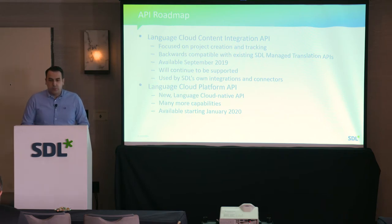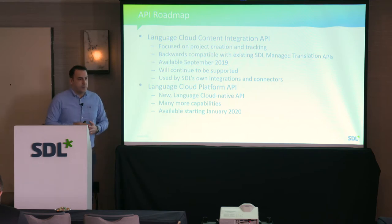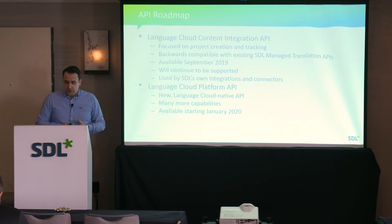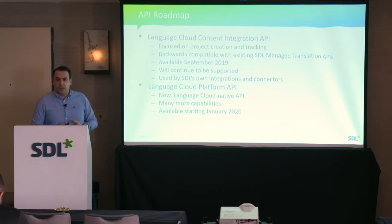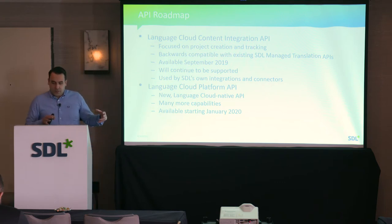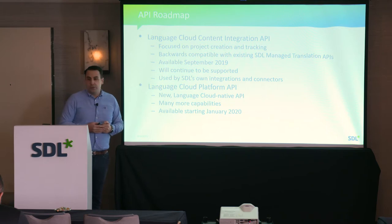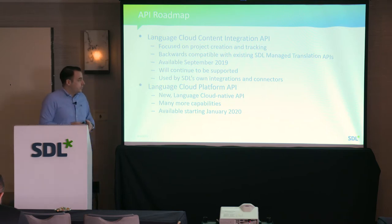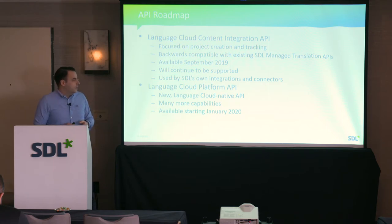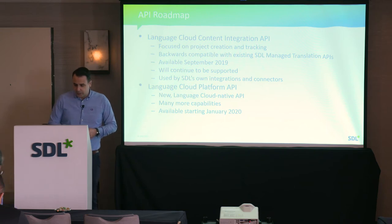In terms of the API roadmap, we have two main APIs we're focusing on. The first is the Content Integration API, which is all around pulling content from data repositories, tracking it, and delivering it back. It's a quite mature API, backwards compatible with the existing managed translation API, and has been in production for three or more years.